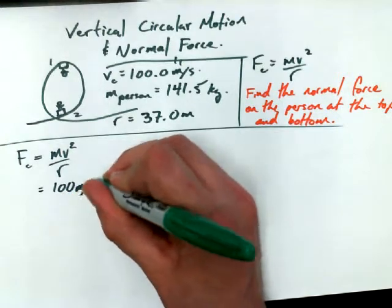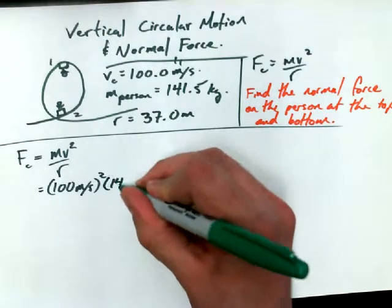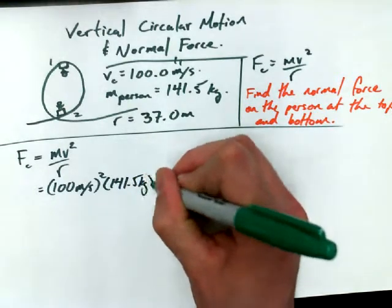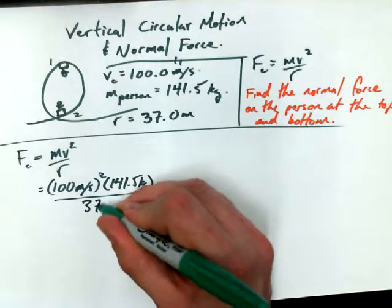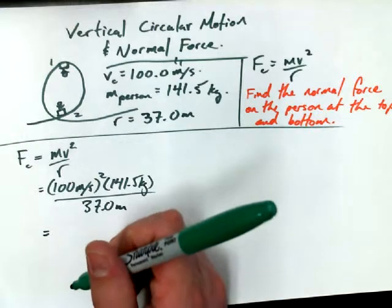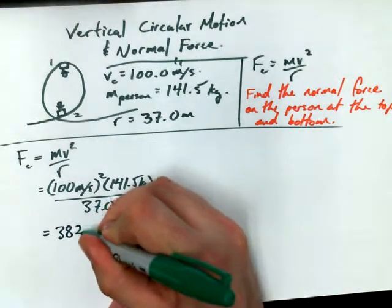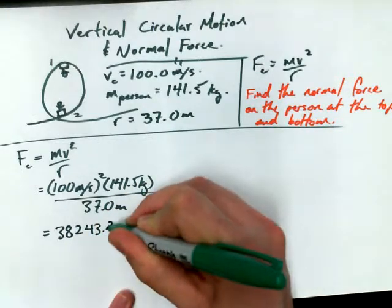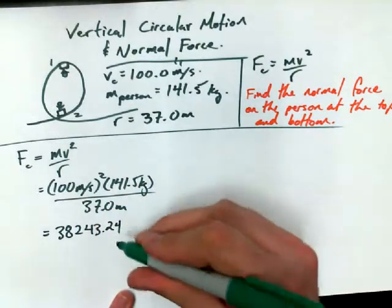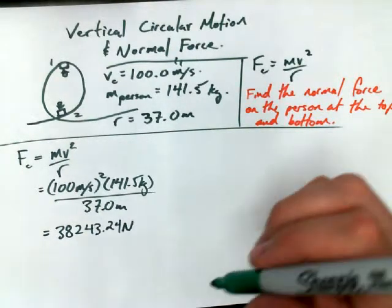100 meters per second squared times 141.5 kilograms divided by 37.0 meters. Did you get it already? It's a huge number. It is huge. 38,243.24 is good. We'll stop at the 4. 38,243.24 newtons.